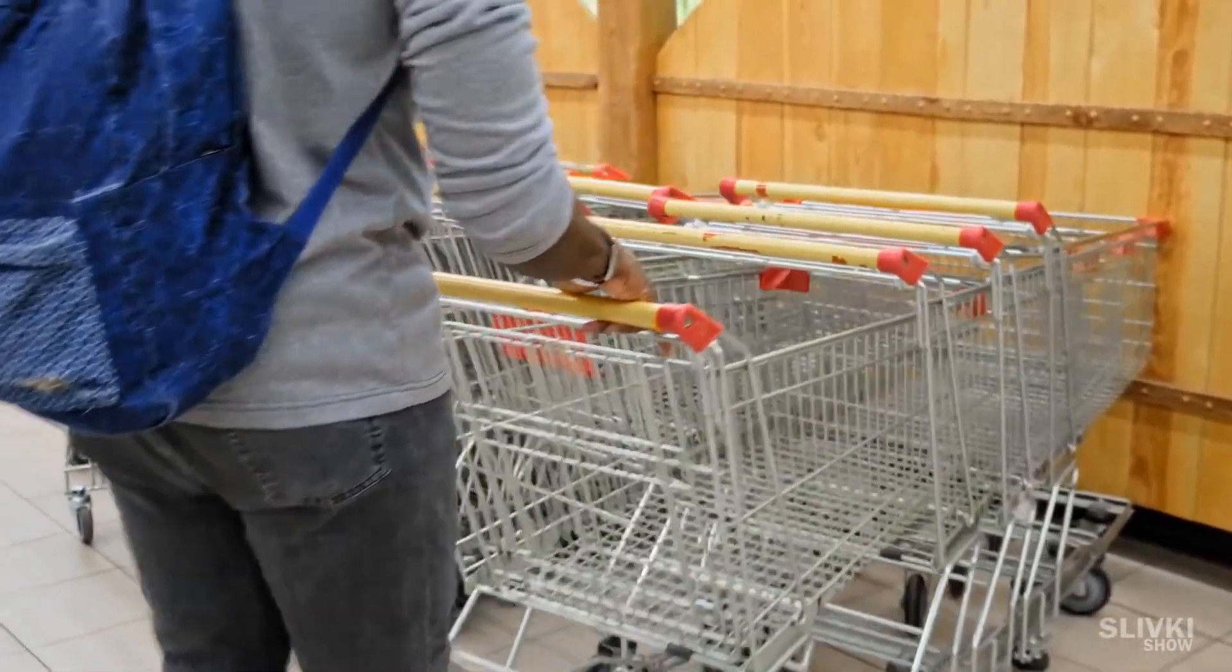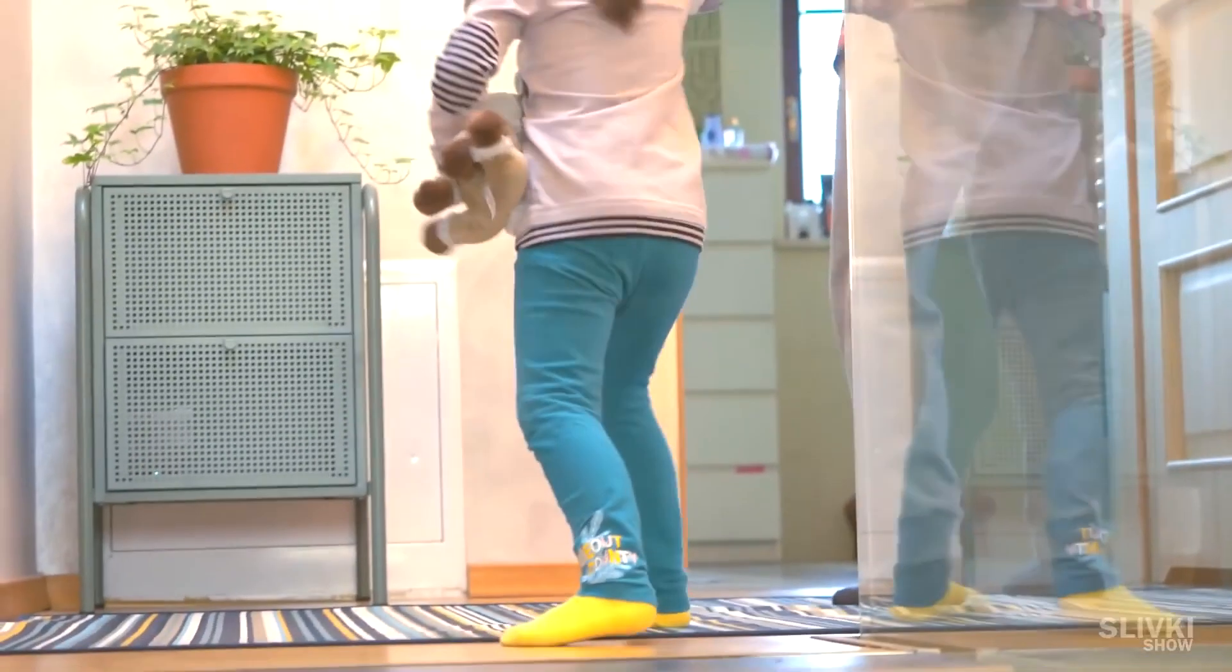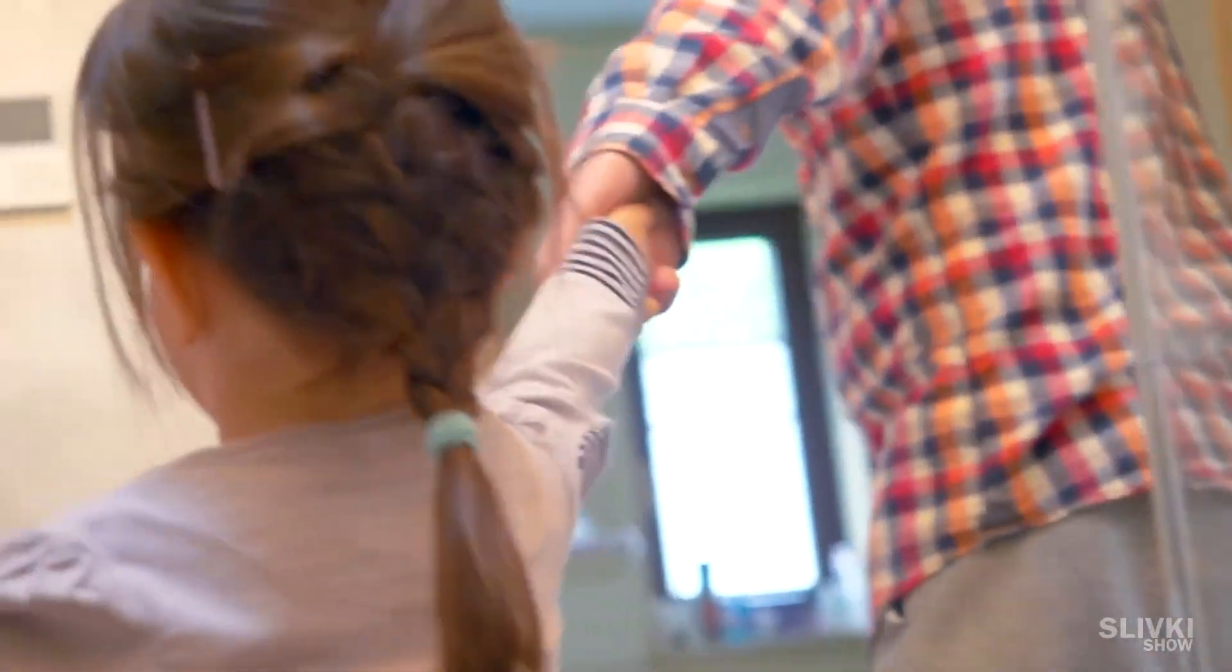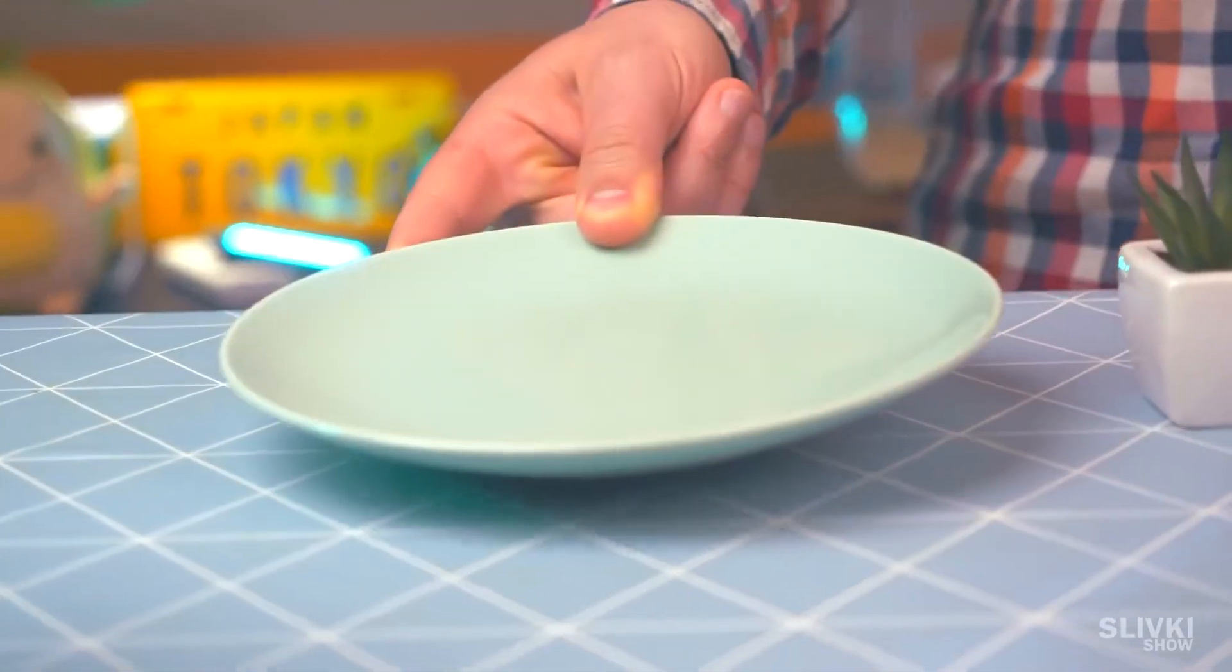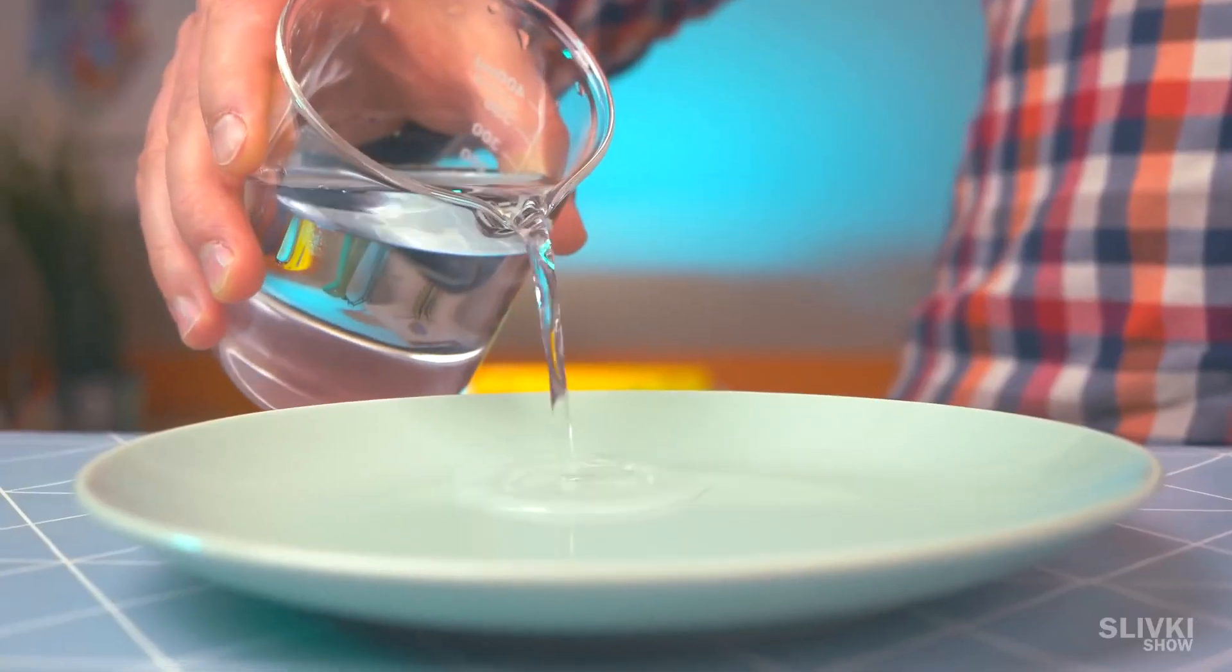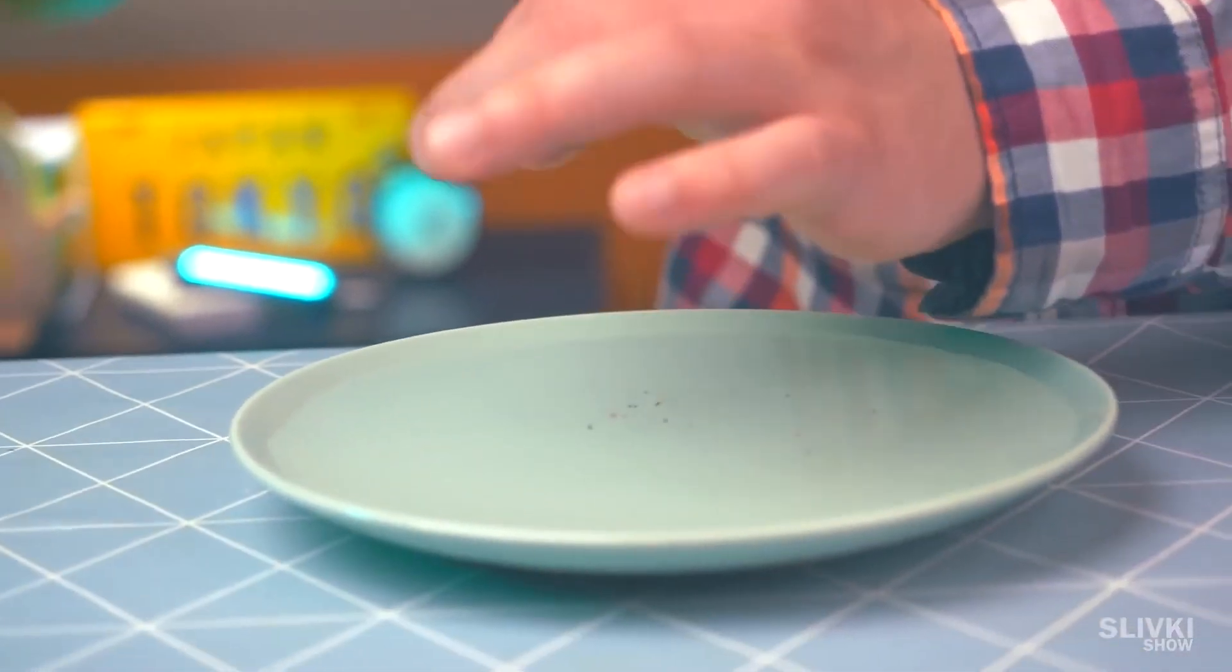Amid the current situation, it's important that elderly and children wash their hands regularly. But it's hard to teach them to use this rule, even harder to convince them that it works. Try to get a regular plate and pour water there. After that, sprinkle some pepper on top.